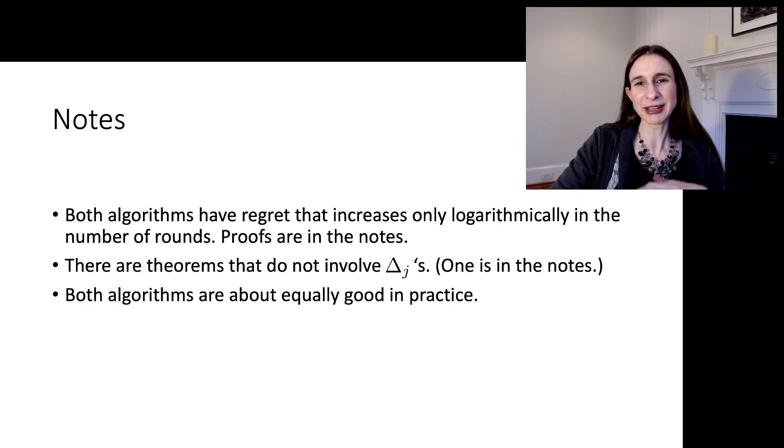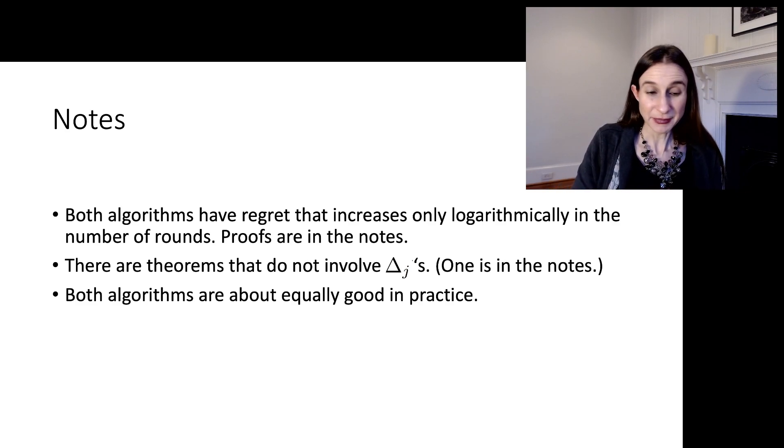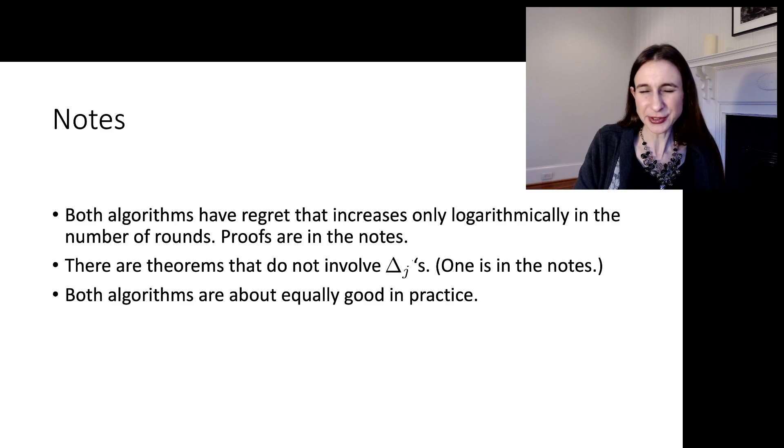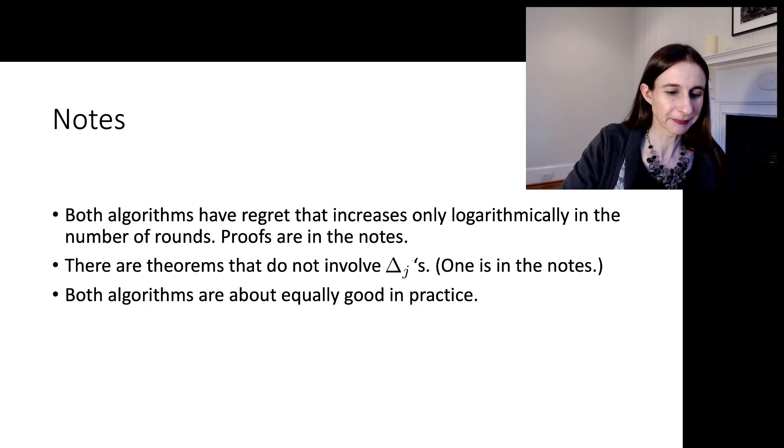You don't know how close the arms are, how close the regret of the arms actually are to each other. And that's true, and there is a regret bound that doesn't involve the δ_j's in the notes. Both algorithms, both epsilon greedy and UCB are actually about equally good in practice. A lot of people think UCB is a bit more elegant because it doesn't randomly explore. It only looks at arms that could potentially be good, but the truth is that in practice they're both about equally good. Thanks.